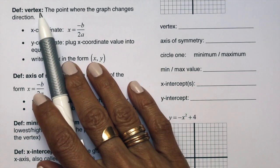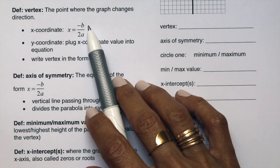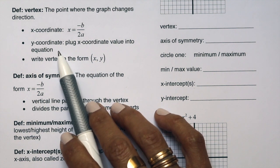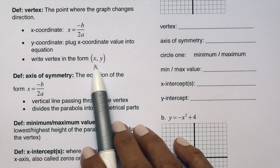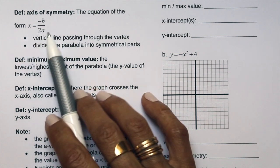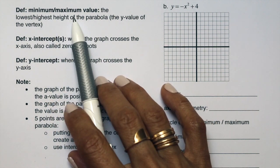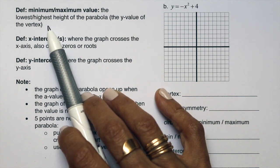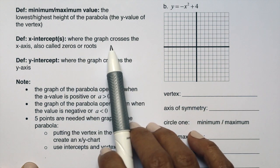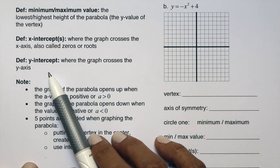When graphing parabolas, we identify the vertex. To find the vertex, we use the formula x equals negative b over 2a. Once you find this value, plug it back into the equation and simplify to find the y-coordinate. Write your vertex as an ordered pair x comma y. The axis of symmetry uses that same x equals negative b over 2a value. We also find a minimum or maximum value, x-intercepts (also called zeros or roots), and the y-intercept.